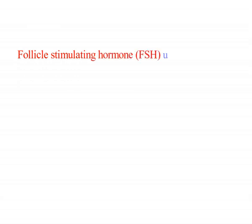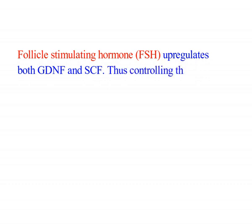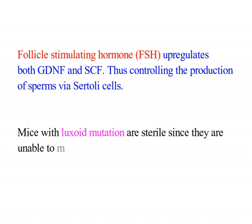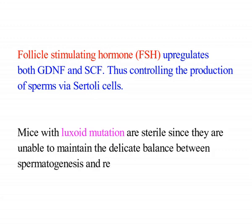Follicle stimulating hormone (FSH) up-regulates both glial cell line-derived neurotrophic factor and stem cell factor, thus controlling the production of sperms via the Sertoli cells. Mice with luxoid mutation are sterile since they are unable to maintain the delicate balance between spermatogenesis and renewal of stem cells.